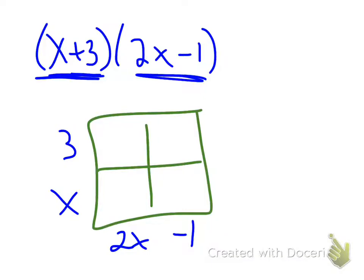So when I start multiplying them, in this box right here, I have x times 2x. That is going to be 2x squared. The top box up here, I'm going to get 3 times 2x is 6x.